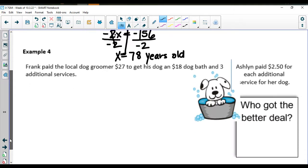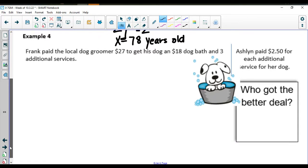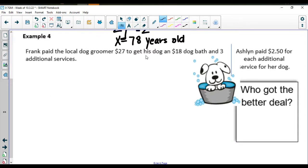In example number four, Frank paid the local dog groomer $27 to get his dog an $18 dog bath and three additional services. Did you know that when you take your puppies to the groomers they can get puppy tattoos, their glitter tattoos? They can also get sprayed with special yummy smelling vanilla scent and they can have their ears cleaned and their nails clipped and all that kind of good stuff.